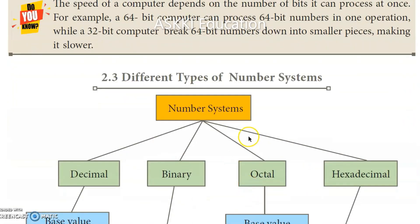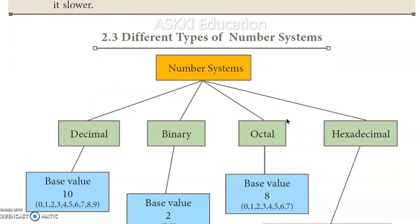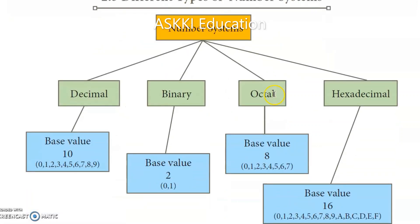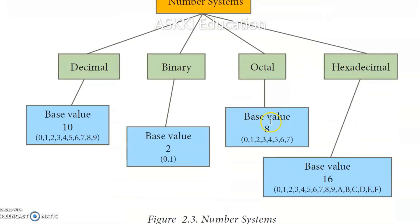Now we will learn four types of number systems: decimal, binary, octal, and hexadecimal. Each number system has a base value, which we also call the radix. The radix is the count of the number of digits in each number system.